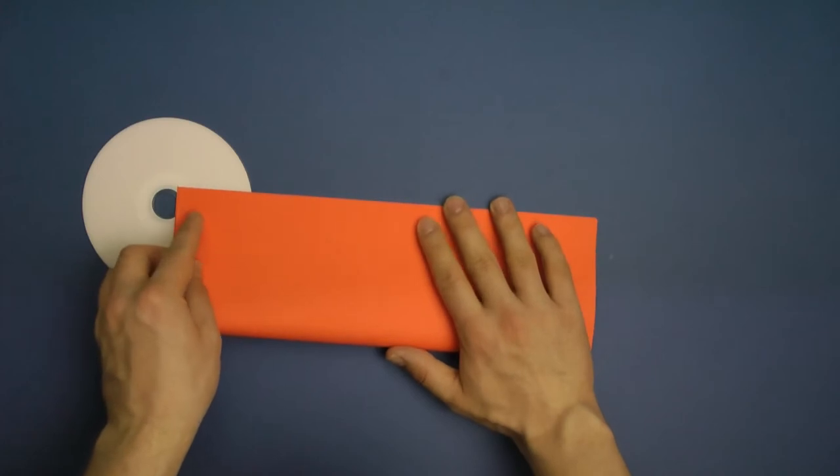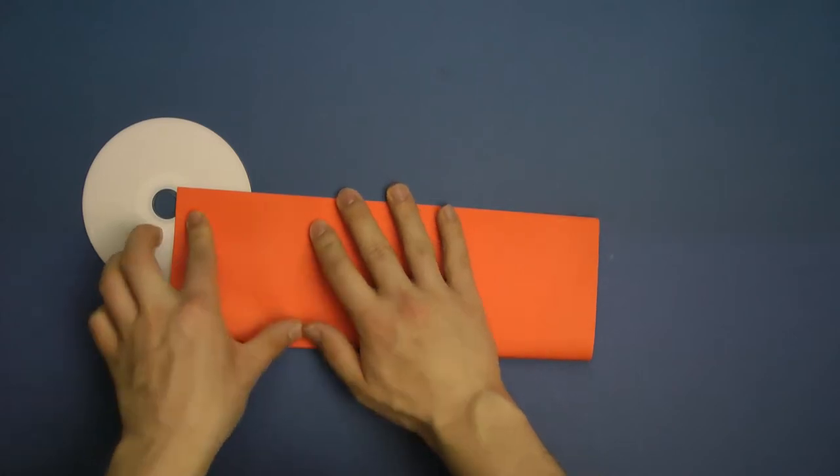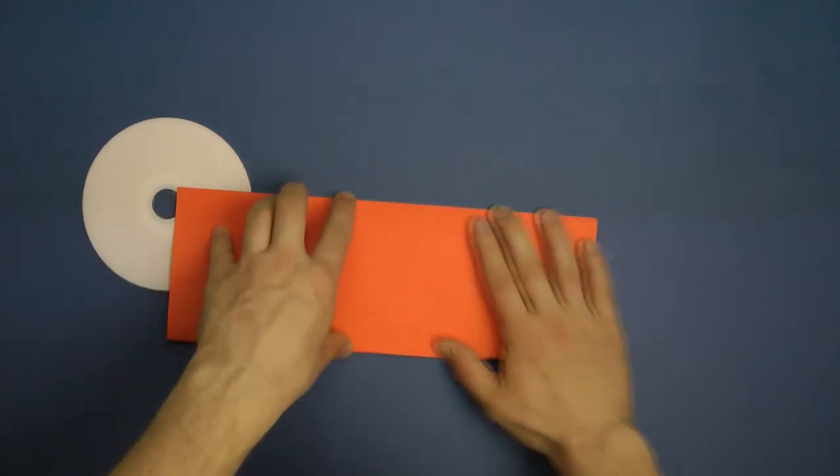And you start by folding it in half on the long edge. Make sure the corners meet nicely and then just crease.